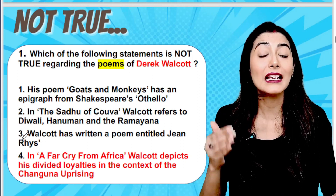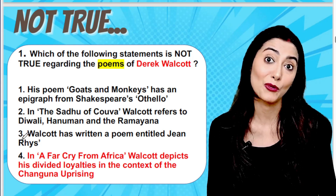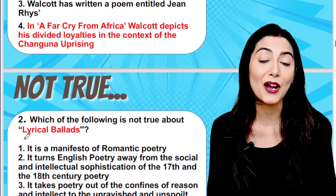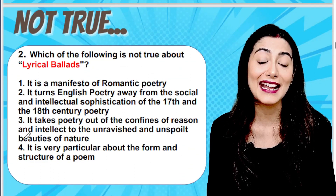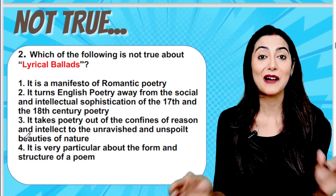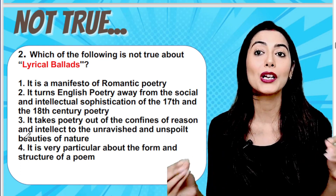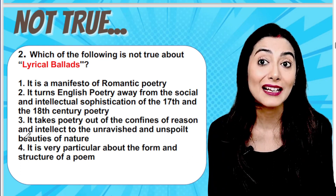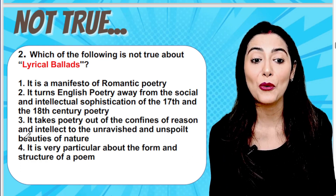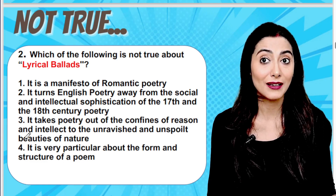'A Far Cry from Africa' has several questions in your exams. In point four of the question, it states that in 'A Far Cry from Africa,' Walcott depicts his divided loyalties in the context of the Changuna uprising — which is false. He actually talked about the Mau Mau uprising in this particular work. The next question is about Lyrical Ballads: which of the following is not true about Lyrical Ballads?